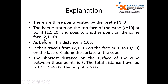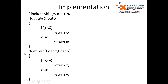It then travels from 2,1,10 to 0,5,9 on the face X equals 0 along the surface of the cube. The distance would be the shortest path on the surface. The distance between Y values 1 and 5 is 4, and when going toward the X axis the distance is 6, while toward the Z axis the distance is 5. We take the shorter distance, which is 5. Accumulating 5 plus 1.05 gives the final answer of 6.05.